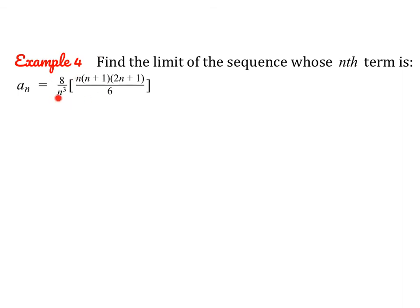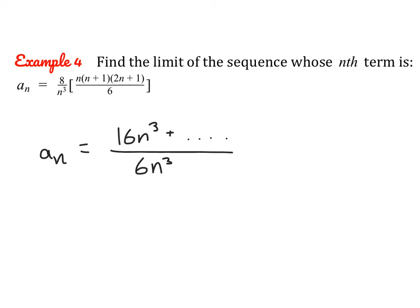Let's try one more together. Since we're multiplying all the factors together, this is really one large term. All we care about are the terms with the largest degree. Looking at the numerator, I see n, n, n — the degree is 3. The degree of the denominator is also 3. So the limit is the ratio of the leading coefficients. The leading term of the numerator is 8 times n times n times 2n, which equals 16n cubed. We don't even need to multiply out the rest. So the limit of this sequence is 16 over 6, which simplifies to 8 over 3.